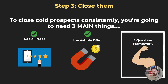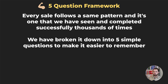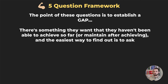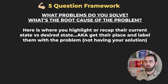To close prospects consistently, you need the five question framework. By now you've given your prospects certainty in your ability based on actual results. Every single sale follows the same pattern — broken down into five questions. If you follow Jeremy Minor, you should — he's awesome at sales. First question: what problems do you solve? Ask: 'What made you interested in our offer? What's your goal? What made you sign up online?' Figure out what they're struggling with, then move to the next step.